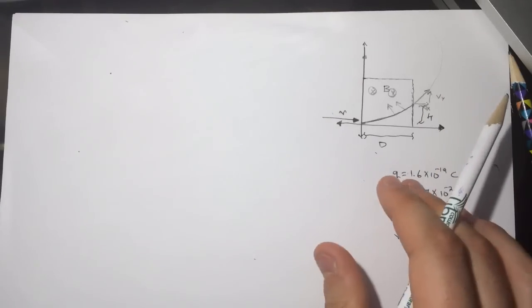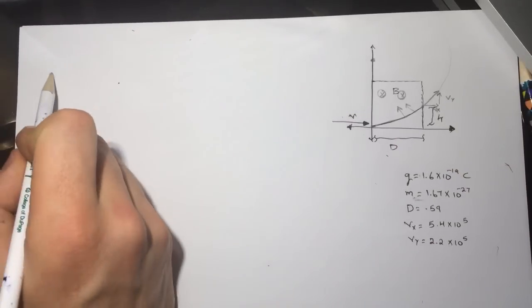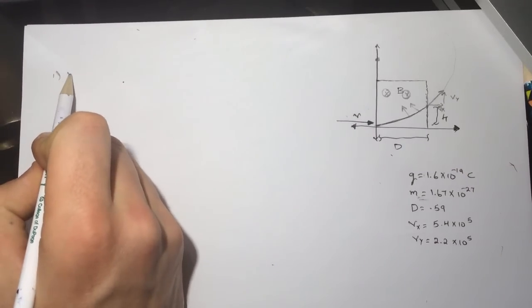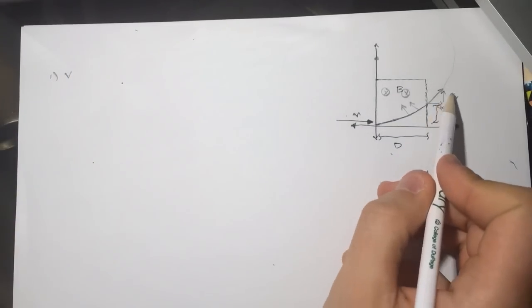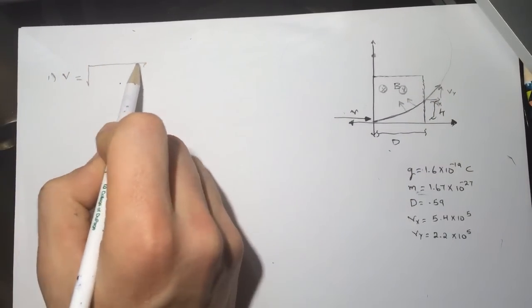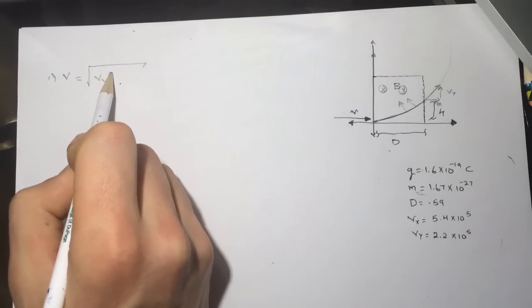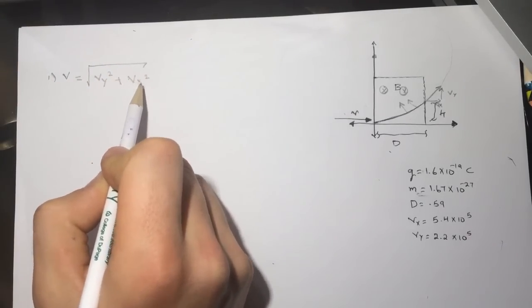So the B here is X, it's in the Z minus direction. All right, so the first question is asking what is the V. So it's just Pythagoras: we have Vy, we have Vx, so it's just square root of Vy squared plus Vx squared.